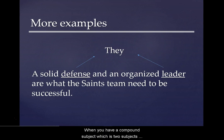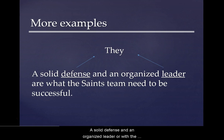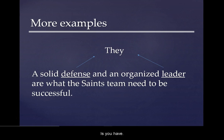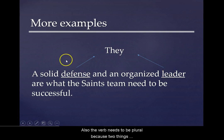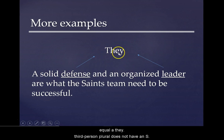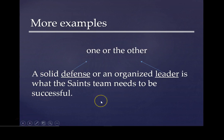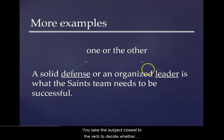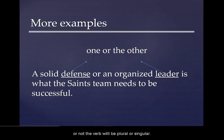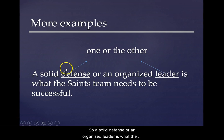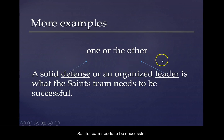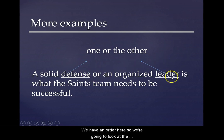When you have a compound subject — two subjects joined with an 'and' conjunction — for example, 'a solid defense and an organized leader are what the Saints team needs to be successful,' the verb needs to be plural because two things equal a 'they.' Third person plural does not have an S. When you have 'one or the other,' you take the subject closest to the verb to decide whether the verb is plural or singular. So 'a solid defense or an organized leader is what the Saints team needs' — leader is singular, so the verb 'is' contains an S.